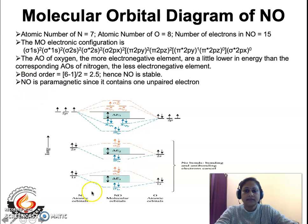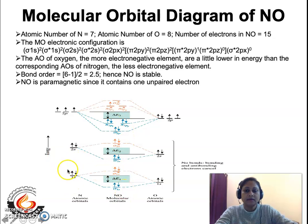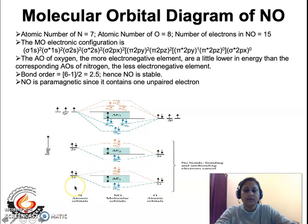The MO diagram represents all the atomic orbitals. The 1s atomic orbital of nitrogen combines with the 1s atomic orbital of oxygen to give rise to a sigma 1s and a sigma star 1s. The left-hand side represents the nitrogen atomic orbitals and the right-hand side represents the oxygen atomic orbitals. The oxygen atomic orbitals are represented at a slightly lower energy compared to the nitrogen atomic orbitals.